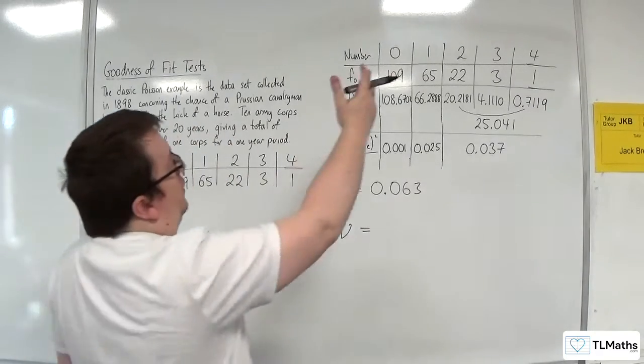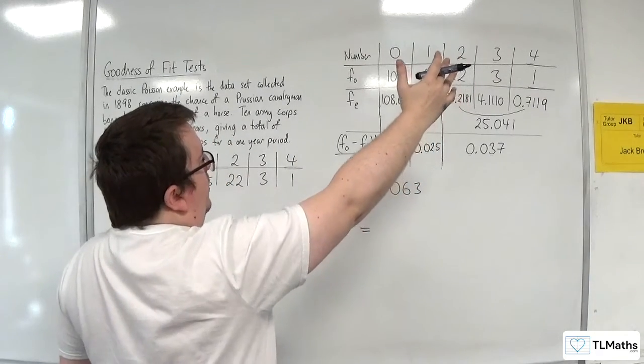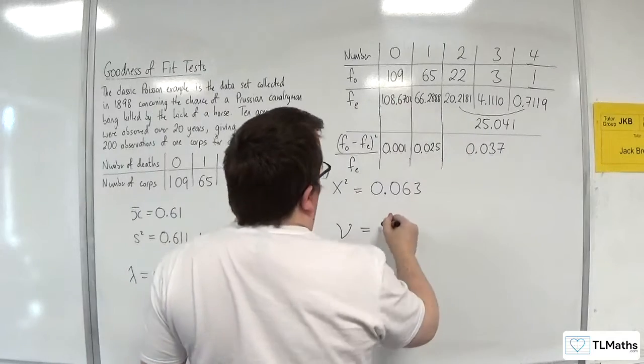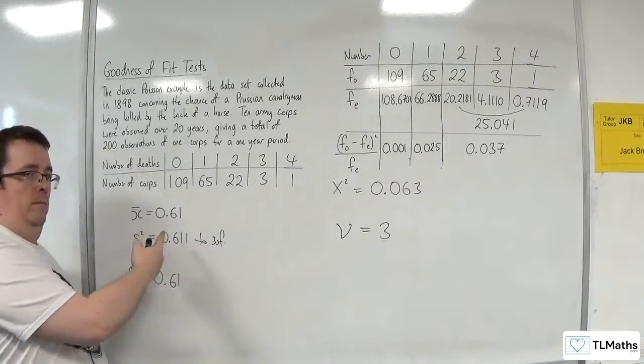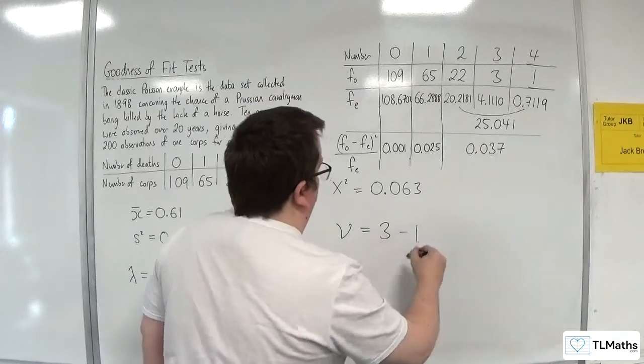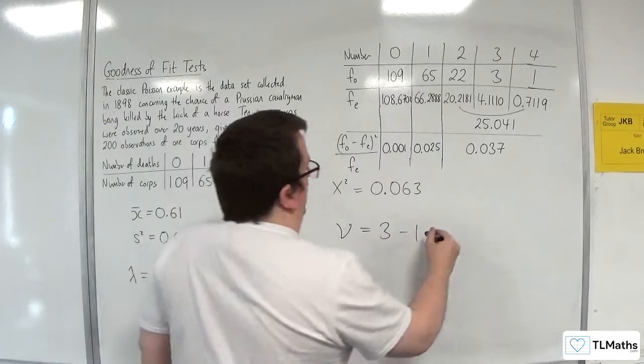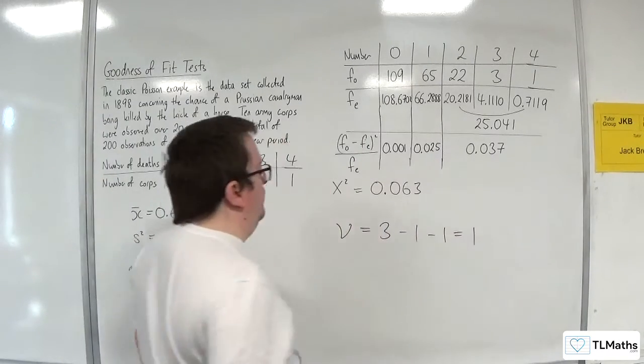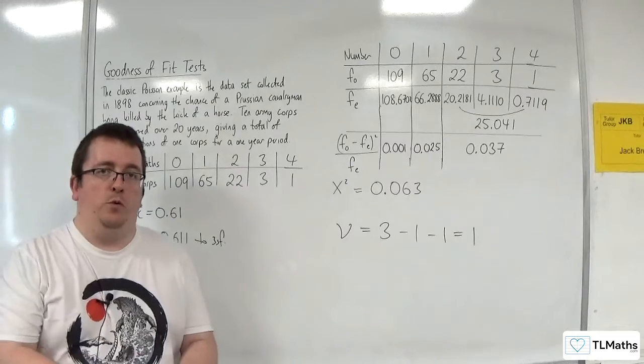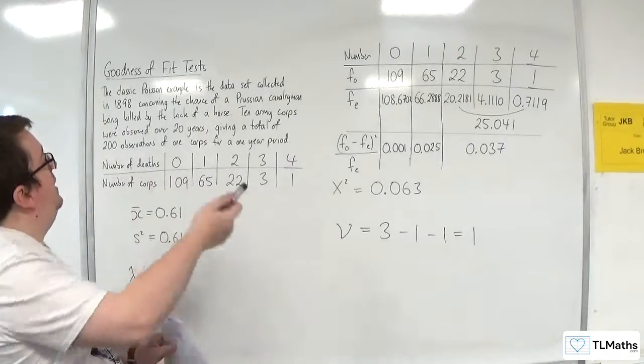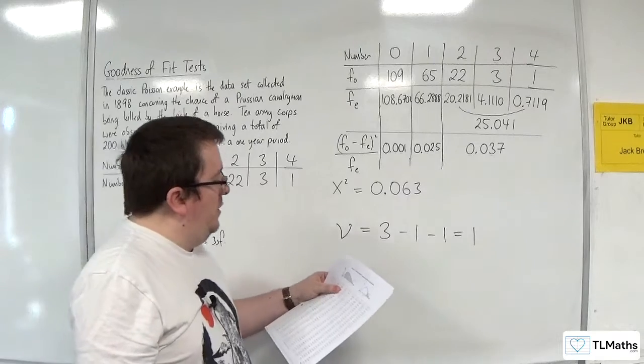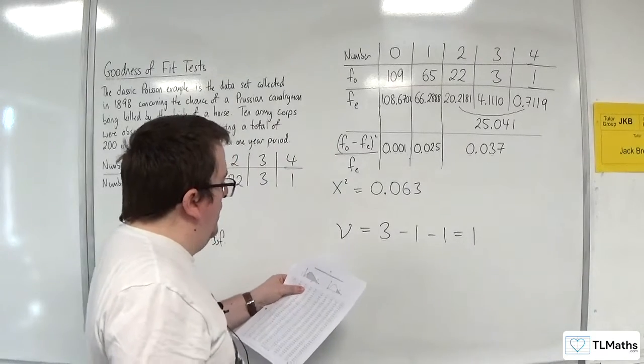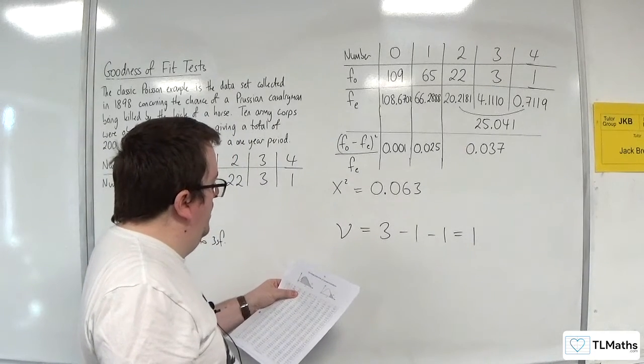Well, we started off with five columns, but we had to reduce it down to three. We had to estimate the parameter, lambda. And we would be taking one away anyway. So we're actually down to nu is equal to one. Now, I haven't put down any significance level here, but nu is one. So, you know, if we looked at that,